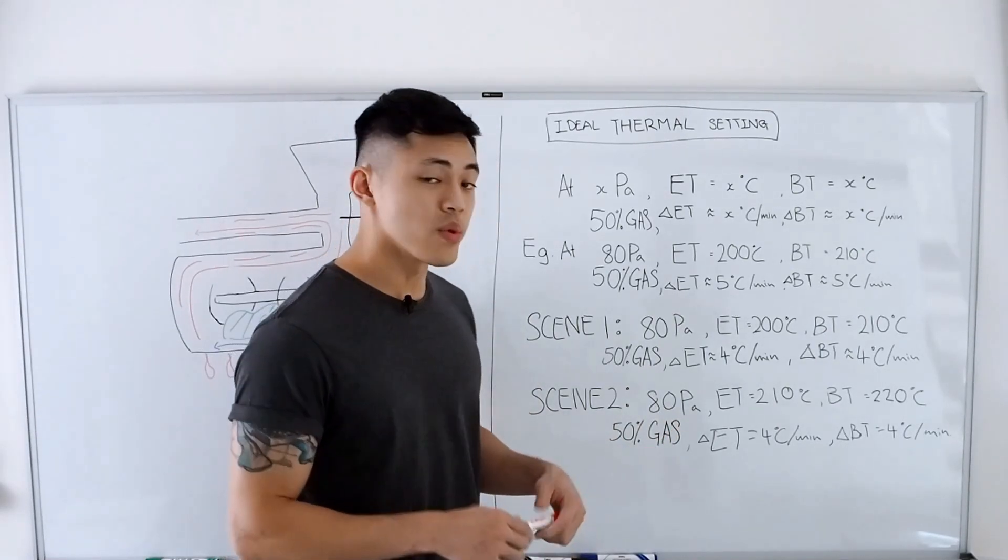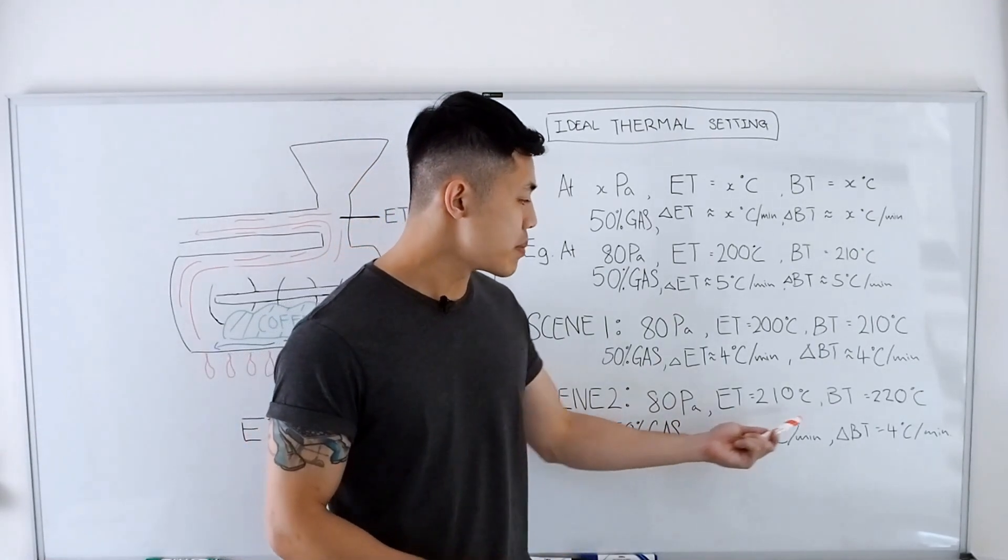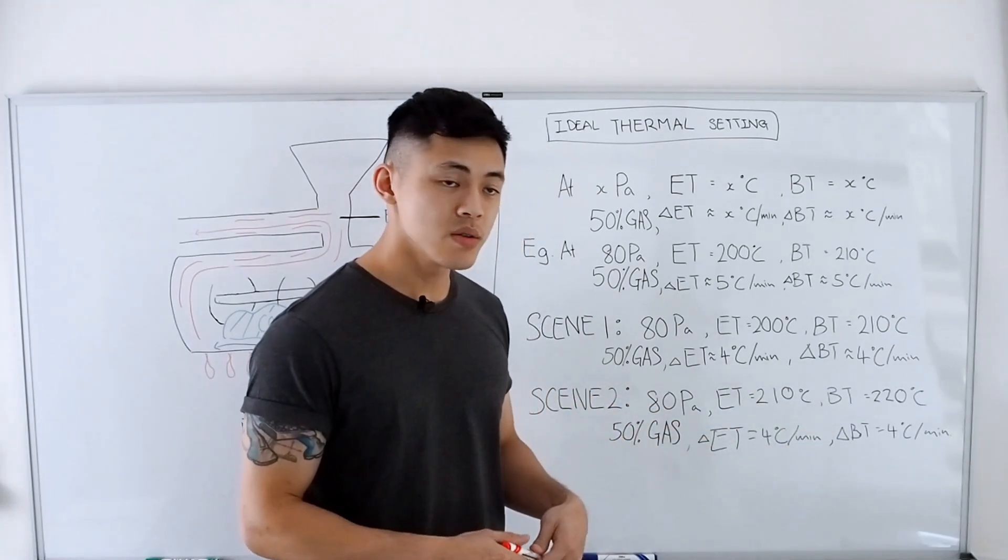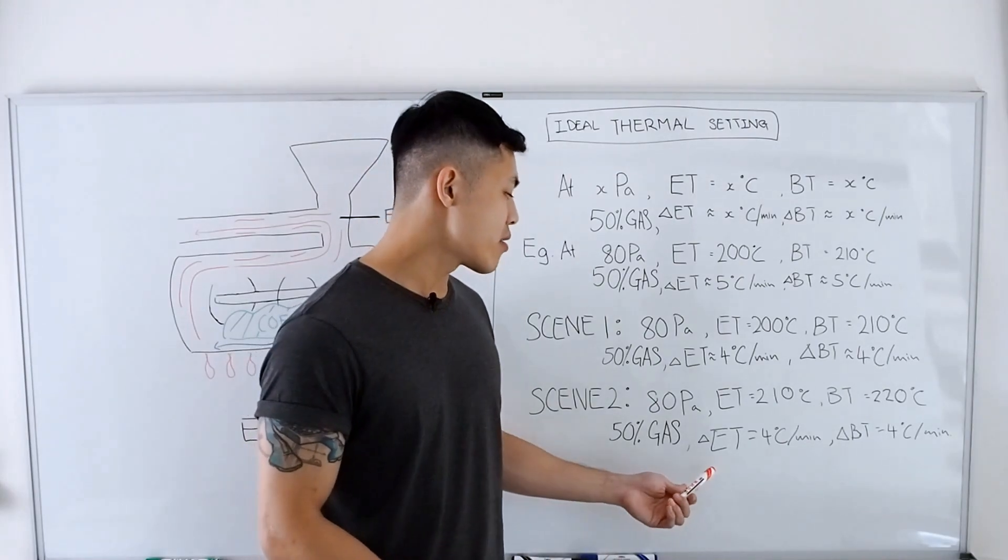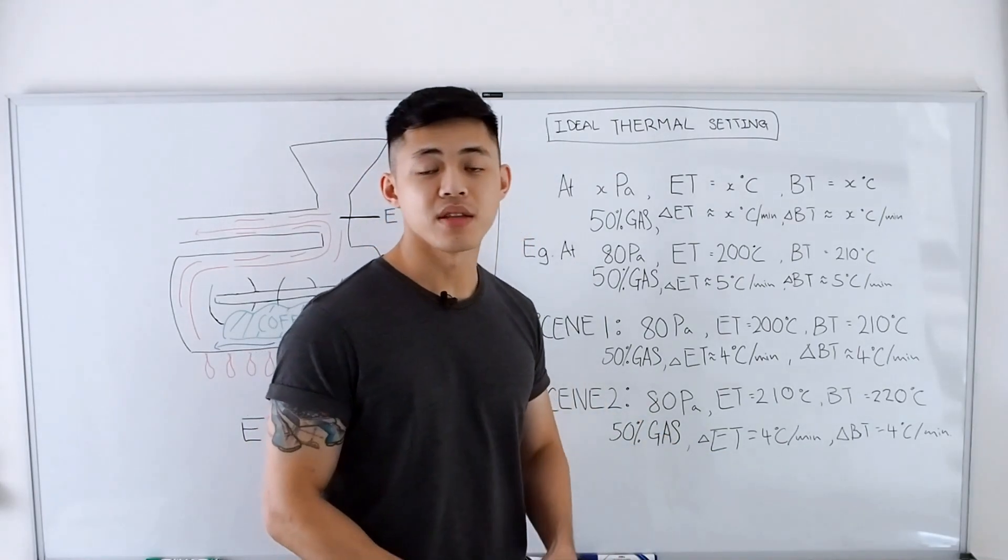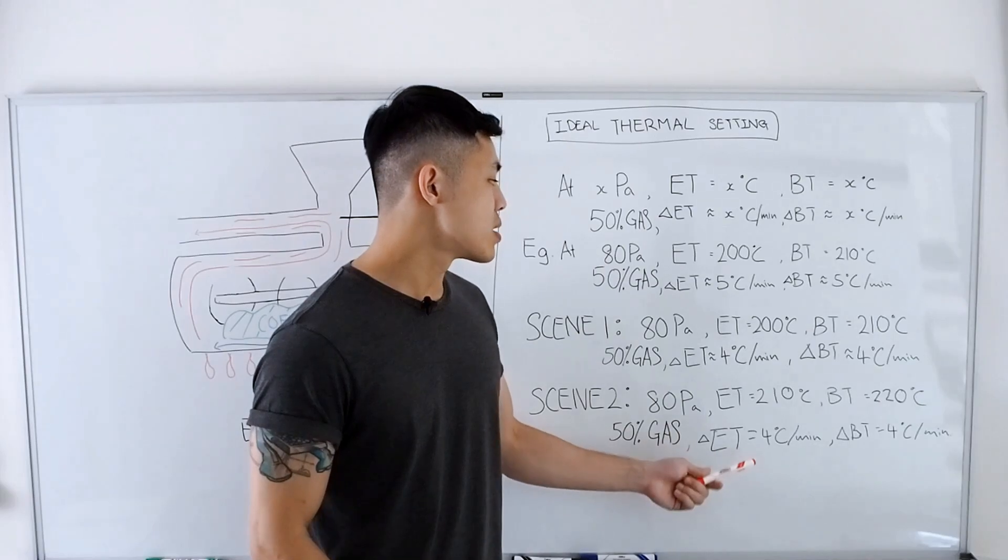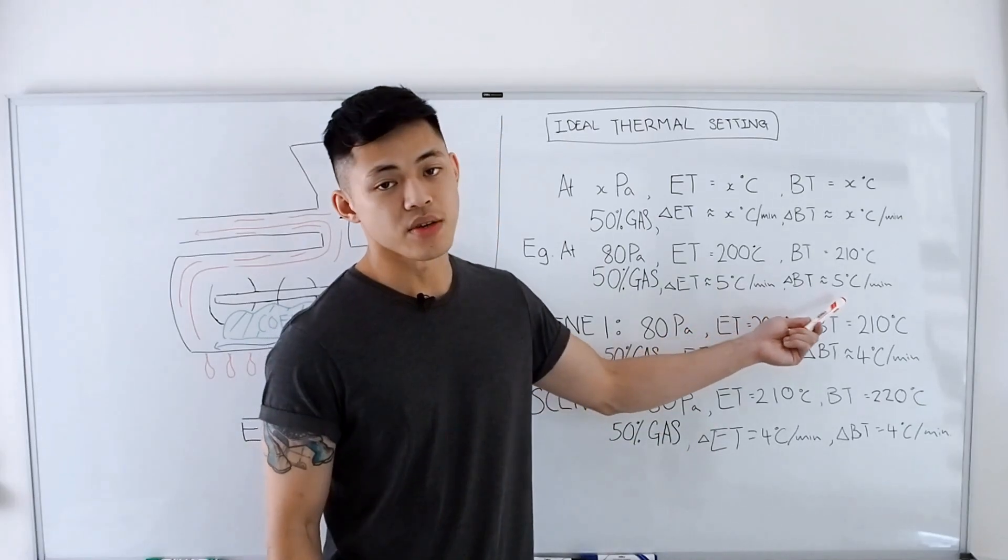So in this scenario, what we want to do is bring the ET and BT back down to 200 and 210 respectively, and then check the rate of rise for the ET and BT again to see if it goes up to 5 degrees Celsius per minute.